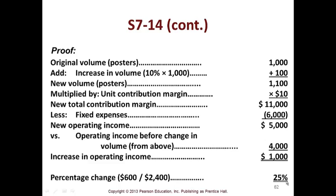Here's the proof: posters plus increased volume times contribution margin is $11,000 less fixed expenses, giving operating income of $5,000. Operating income before the change in volume was $4,000, so there's your $1,000 increase. The $1,000 divided by $4,000 is 25% — there's your proof that this works.